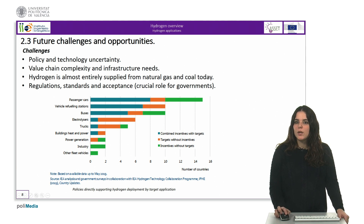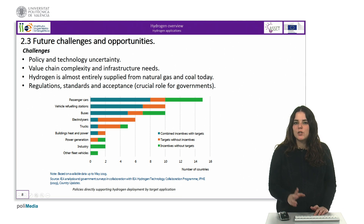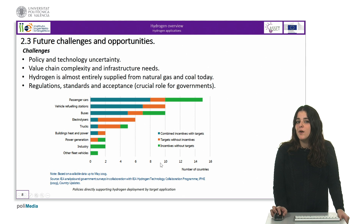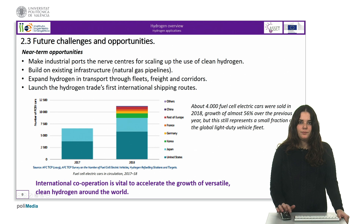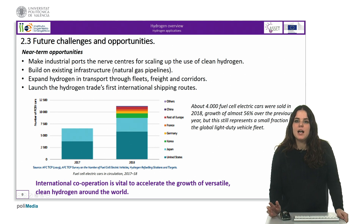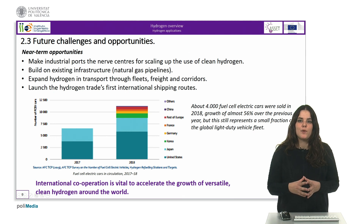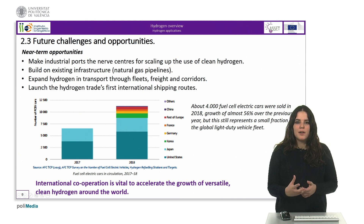In this figure, we can see the number of countries supporting different policies of Hydrogen deployment by target application. The International Energy Agency has also identified four near-term opportunities to boost Hydrogen on the path towards its clean and widespread use. As industrial ports concentrate much of the refining and chemical production that uses Hydrogen based on fossil fuels, they could become the nerve centers for scaling up the use of clean Hydrogen.